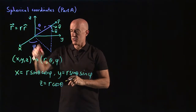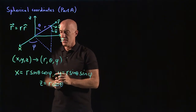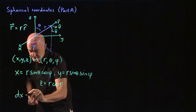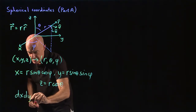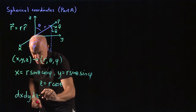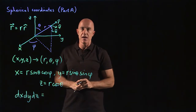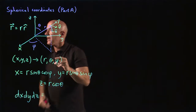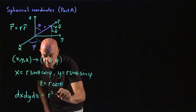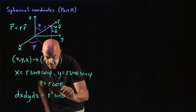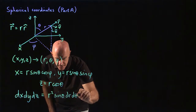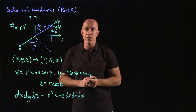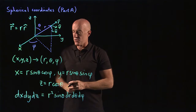So this gives us our change of variables formula. We also have the infinitesimal volume dx dy dz. You can compute the 3×3 determinant of the Jacobian, and you get r squared sine theta dr d-theta d-phi. So that's how you do the change of variables in spherical coordinates.